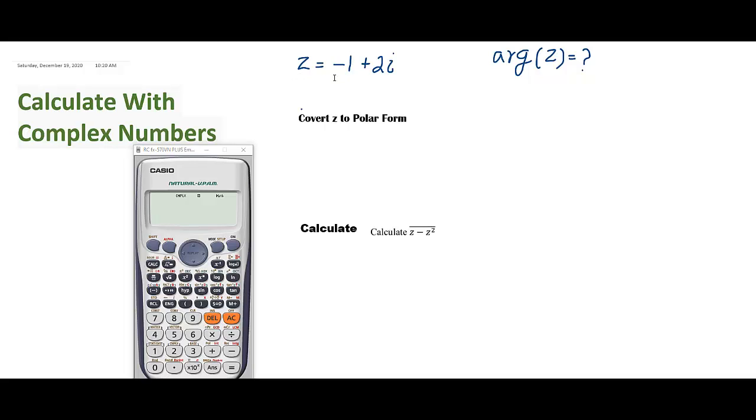In this question, I have to find the argument of this complex number minus 1 plus 2i. As this complex number is in rectangular form, I have to select the setting of rectangular form in this calculator. For that, press shift then this mode and come down with this arrow key here at number 3. It is complex number setting. Now I have to select out of these two, either rectangular setting or polar form setting. So as my question is in the rectangular setting, select 1.